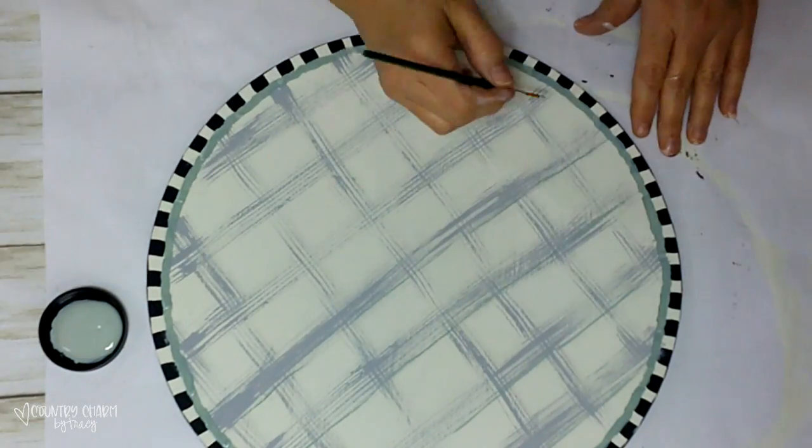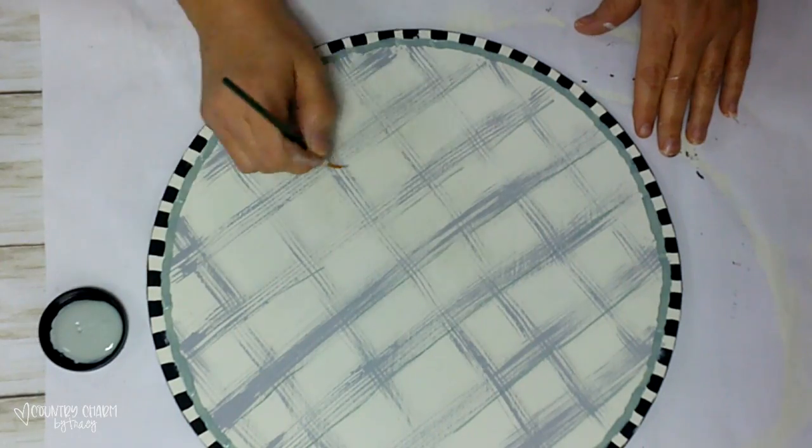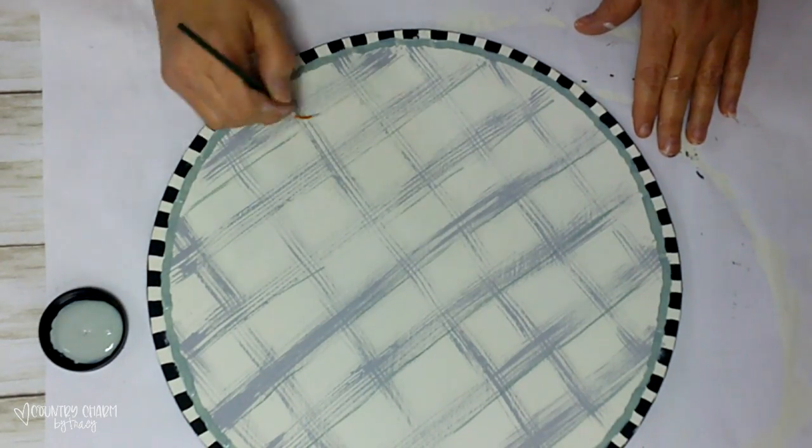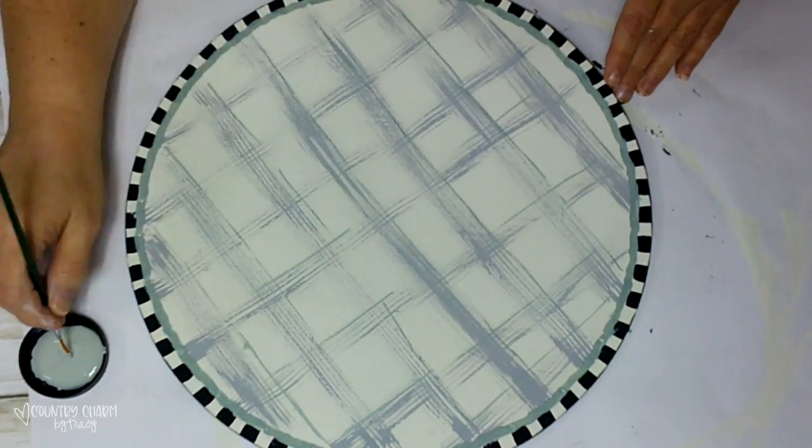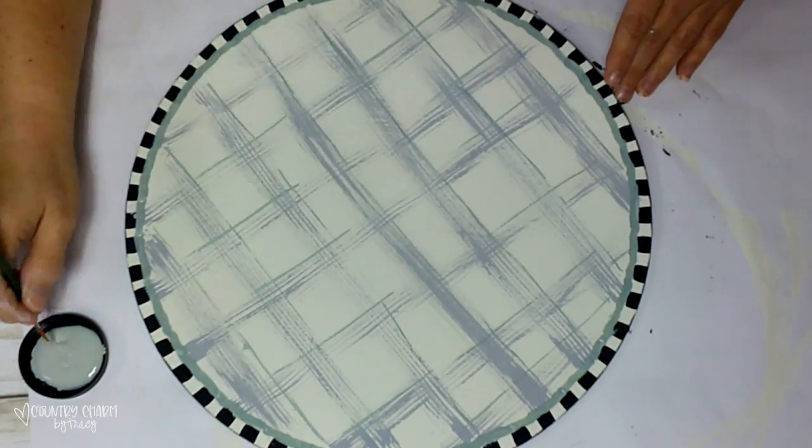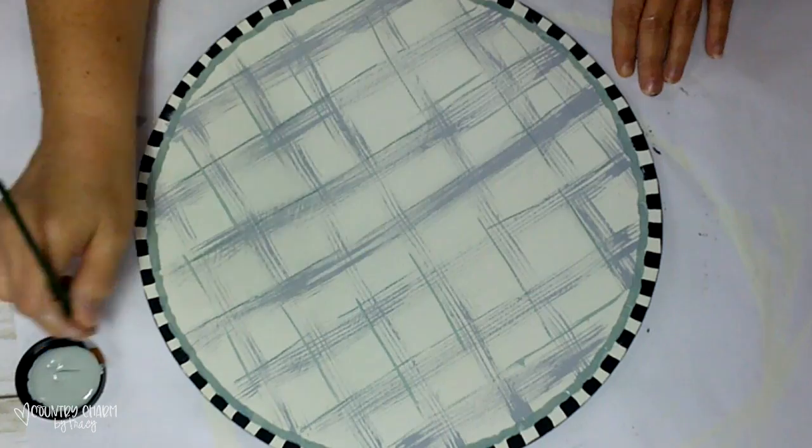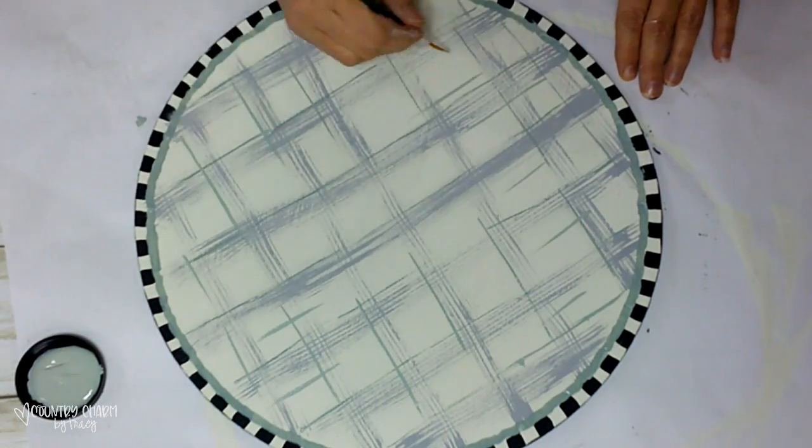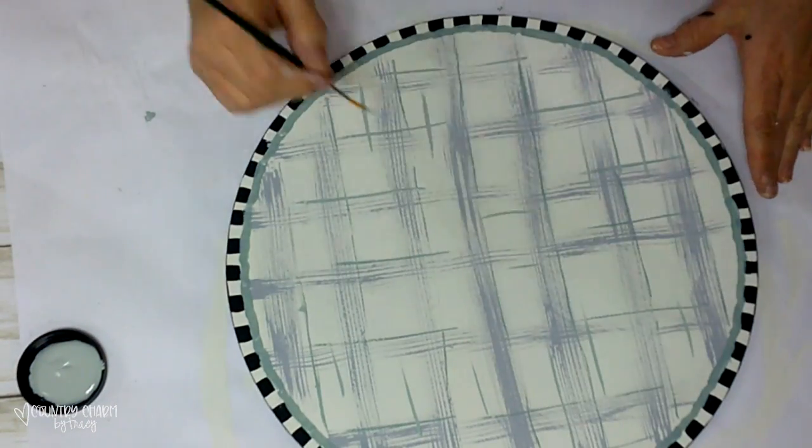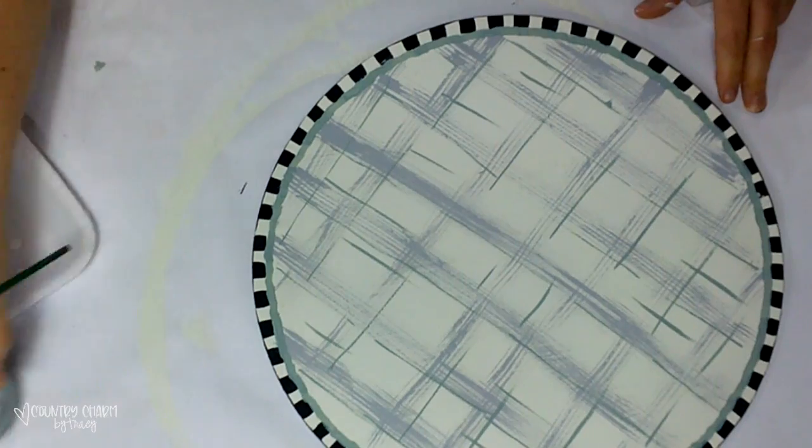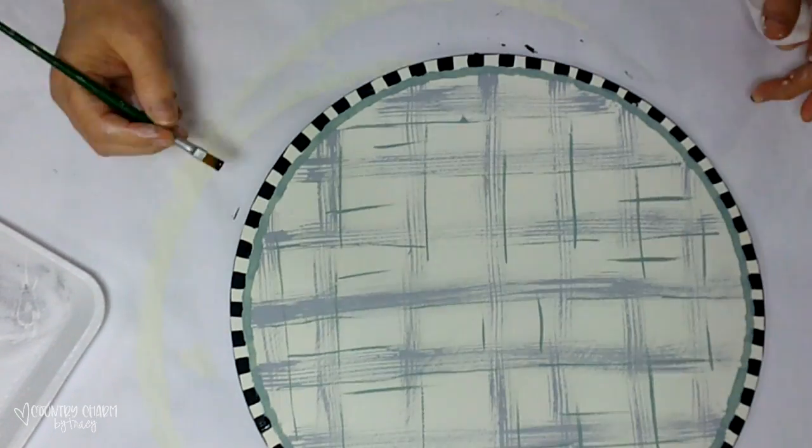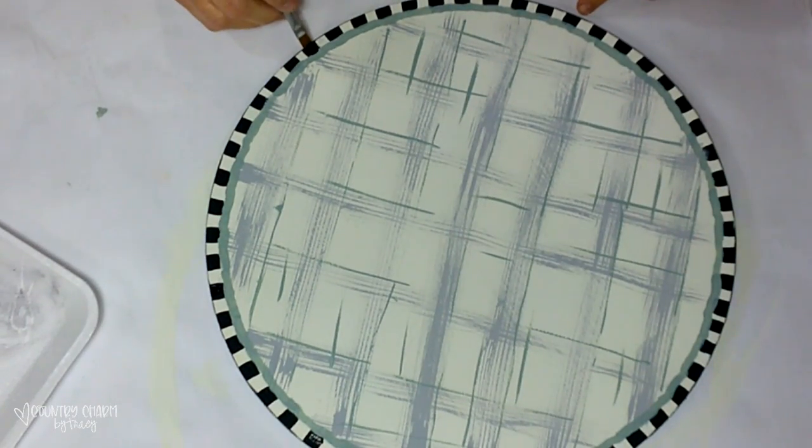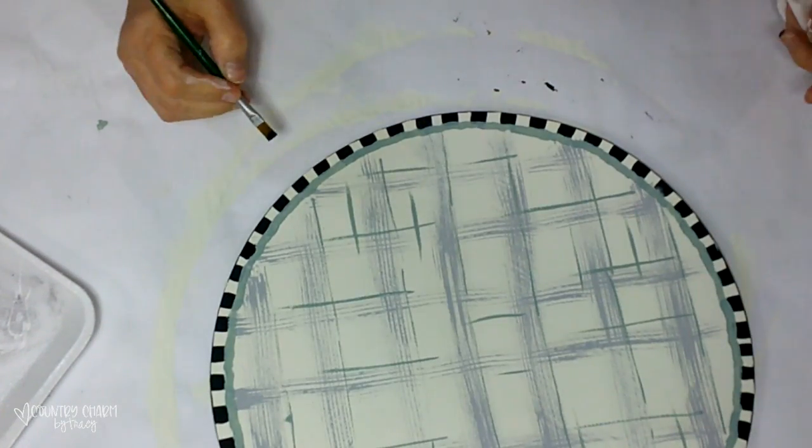Then I'm taking my liner brush and that same green paint and just kind of enhancing the plaid background just a bit. And then I will clean up any of the stripes just with the black paint or the plaster paint. I will just clean up anything that may be like I got the gray paint on or the green paint a little bit too close. I just go around and clean that up like that.